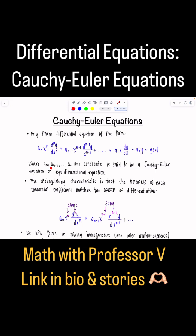Where a_n, a_{n-1} all the way down to a_0 are constants. This is said to be a Cauchy-Euler equation or another term you might encounter is equidimensional equation.